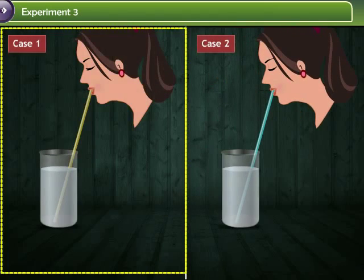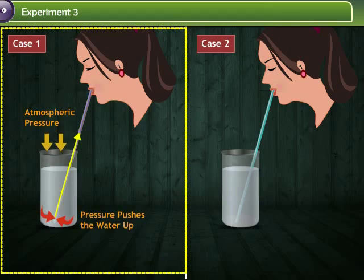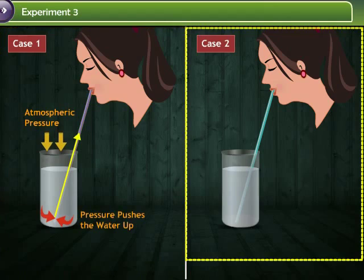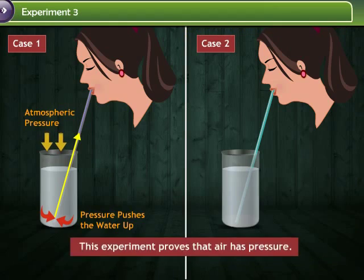When you sip water using the yellow straw, the air pressure inside the straw is reduced. As the air pressure outside the straw is higher, it pushes down on the water and forces some of the liquid up the straw. But the blue straw with the holes allows an endless supply of air to come in. Therefore, the air pressure is never reduced and the liquid never travels up the straw. This experiment also proves that air has pressure.